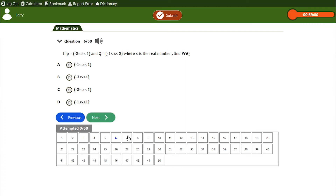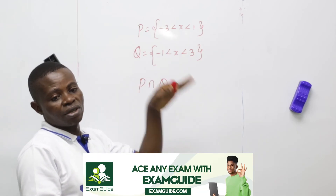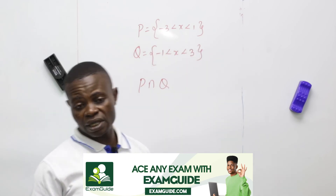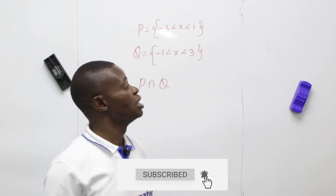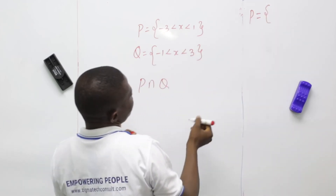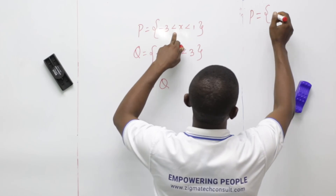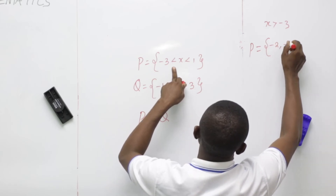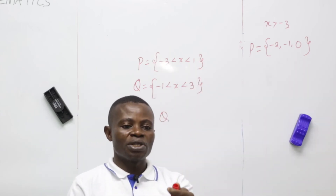Let us take samples from past questions using our Exam Guide software. Find P intersection Q. You cannot find P intersection Q without listing the elements of the set first. To list the elements of P, you must understand the inequality sign. X is greater than minus 3 but less than 1. So the elements of P are: minus 2, minus 1, 0.